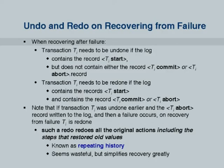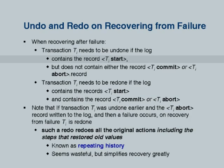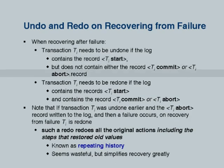When you recover from failure, a transaction needs to be undone if the log contains Ti start but does not contain either Ti commit or Ti abort — these are the incomplete transactions. On the other hand, if the log contains Ti start and either Ti commit or Ti abort, the transaction needs to be redone. In the recovery algorithm, first everything is redone including actions of incomplete transactions, and after that undo is done for incomplete transactions.